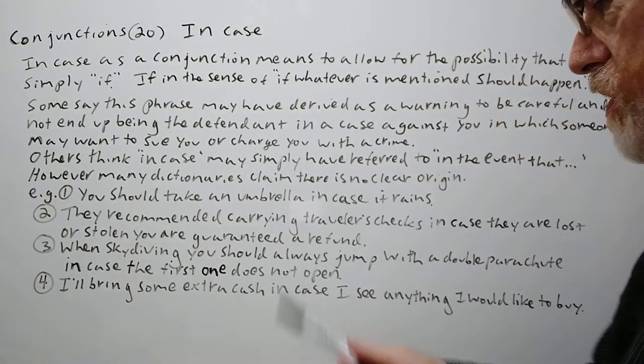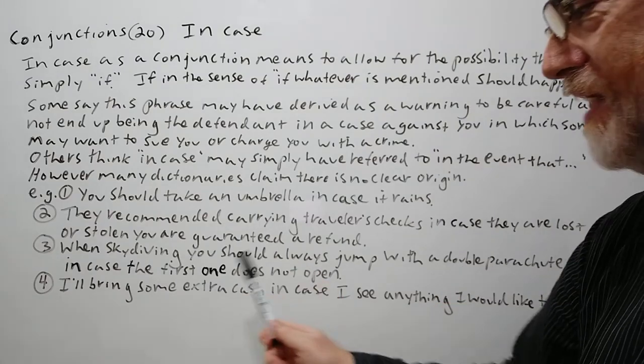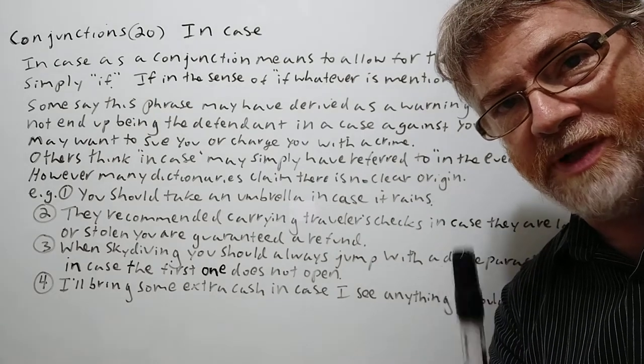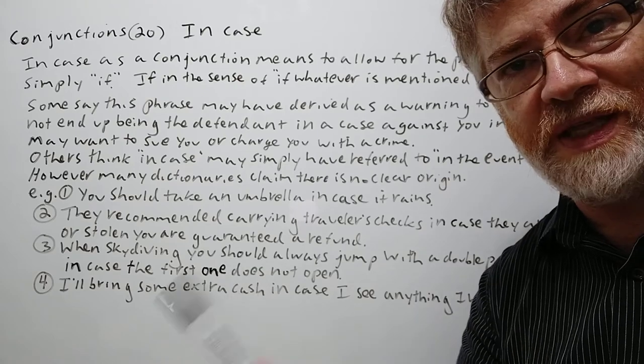Let's continue. When skydiving, you should always jump with a double parachute in case the first one does not open. Yes, if it doesn't open, you're really in trouble if you don't have a second parachute. So again, if, in the event that.